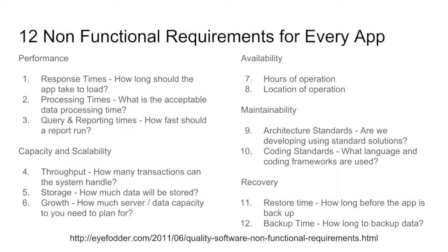When you look at non-functional requirements that you run into for every application, they are divided across a number of different categories, including performance, availability, maintainability, capacity and scalability, and recovery. We often look at response times and processing times — when you're running a report, how fast should it run? If you run a large query, what's the expected time the business user will accept before they say the system's not usable? When you think about capacity and scalability, how many transactions can the system handle? What happens if you receive thousands of orders at once? How are you ensuring you're scaling your application? Regarding data, how much will be stored, where will you store it, and how will that data be encrypted? As more personally identifiable information is brought to the web, we need to know how that data is being handled, stored, and encrypted given all the different data leaks we've seen.